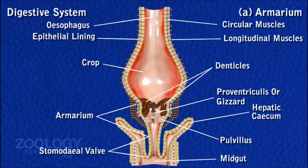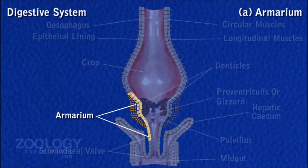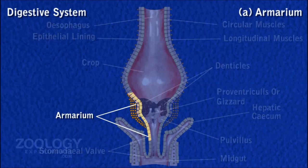Longitudinal folds alternate with six longitudinal grooves which also bear small secondary folds. The cuticular lining of each longitudinal fold forms, in the interior part, a thick plate produced centrally into strong, sharp teeth.